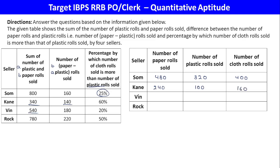Next: sum is 540 with difference 180. Then 200 plus 520 equals 720. 720 divided by 2 equals 360. 360 minus 180 equals 180 for plastic. Cloth is 20% more than plastic: 20% of 180 equals 36, so cloth equals 216.